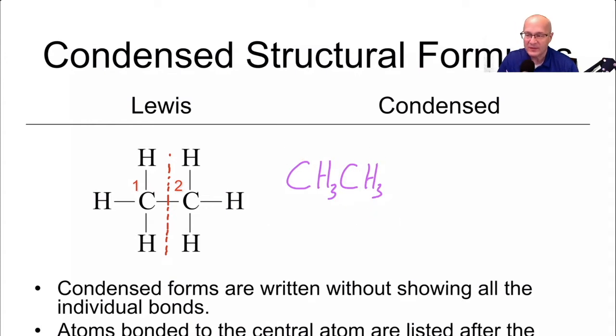This is called an expanded structural formula or also called a Lewis formula. This is a condensed structural formula. Notice how it leaves out some detail. It leaves out the carbon carbon bond. It leaves out the carbon hydrogen bonds. But we don't need all that detail because we know that this carbon is bonded to that one. This carbon has three hydrogen surrounding it. That's the only way to draw it without violating the octet rule.